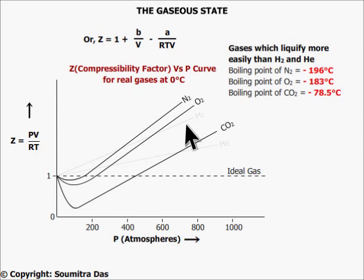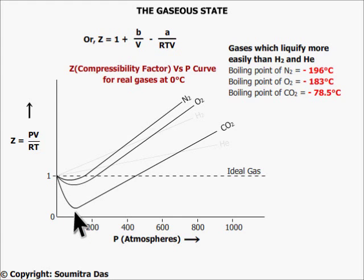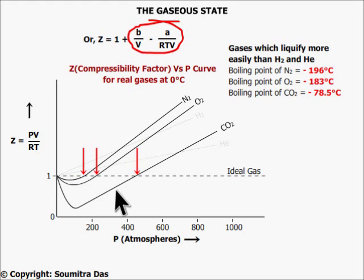For gases where molecular interaction is greater than in hydrogen or helium, at low pressure the volume is high and the B/V factor will not matter much, but the A/RTV factor will come into play, causing negative deviation and Z less than one. After reaching a minimum, as pressure is increased further, the B/V factor also comes into play and the curve rises. At one point both factors cancel each other's effect and the gas behaves ideally, with Z equal to one. Increasing pressure further, the B/V factor becomes more pronounced because of the low volume, and there is a positive deviation thereafter.